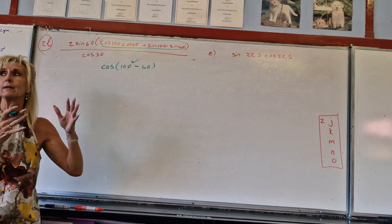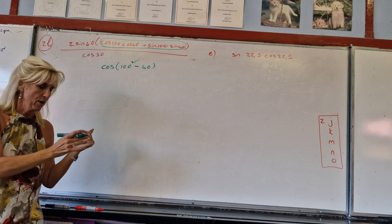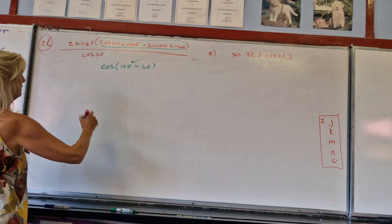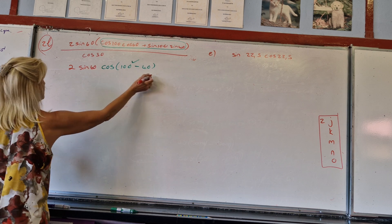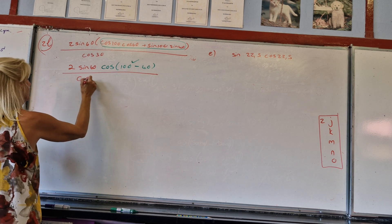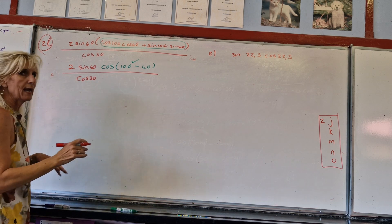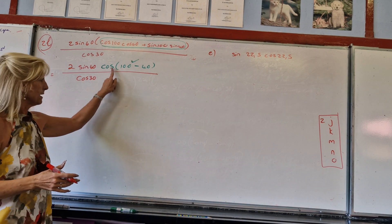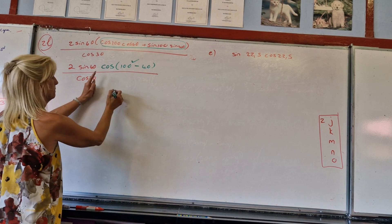Right. And then the rest of it. Now there's lots of stuff you can do. I'm doing what I'm doing for a reason. But you can do a lot of stuff now. That's going to become what? Cos 60.